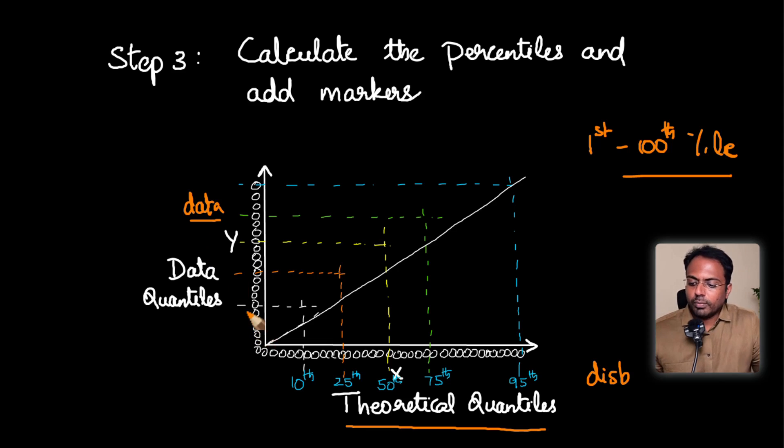Now, we are going to mark on this plot all the respective quantiles from first percentile up to the 100th percentile. So for example, I have drawn certain markers here. This point here corresponds to 10th percentile on the x axis. Likewise, this point here marks the 10th percentile, corresponding 10th percentile on the y axis, which is the data.